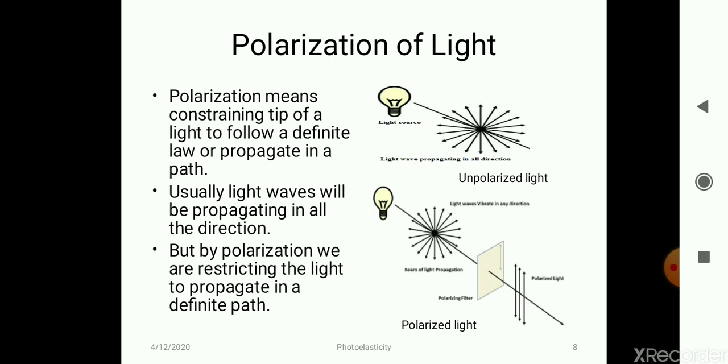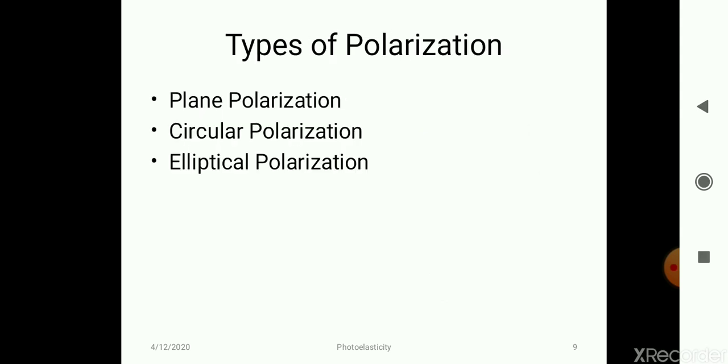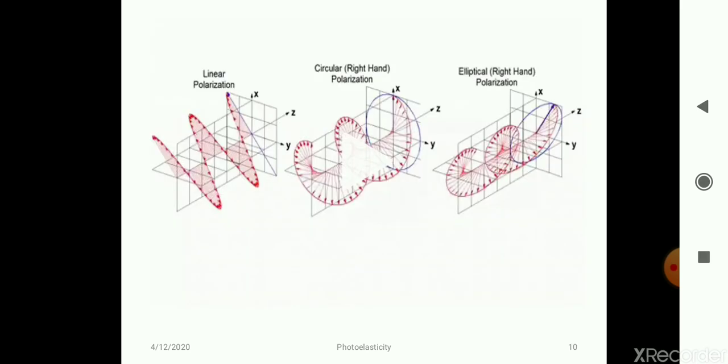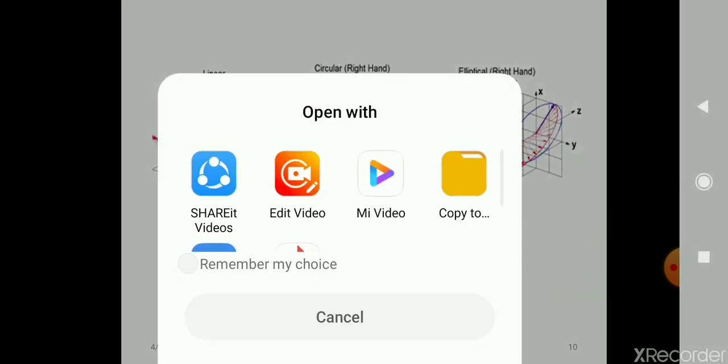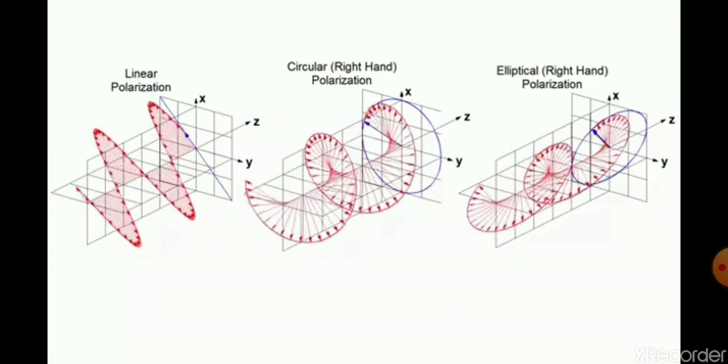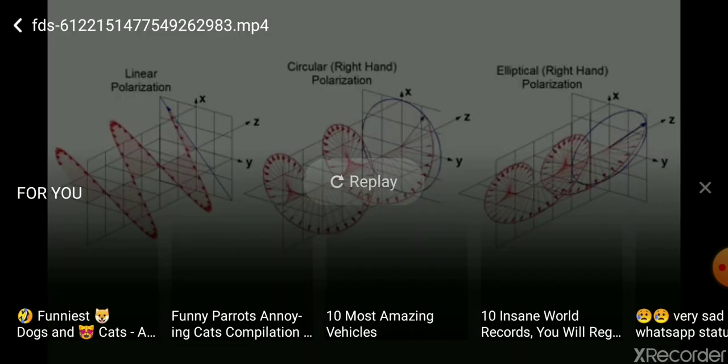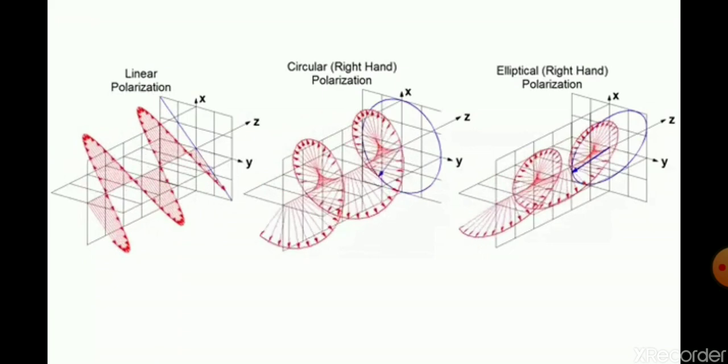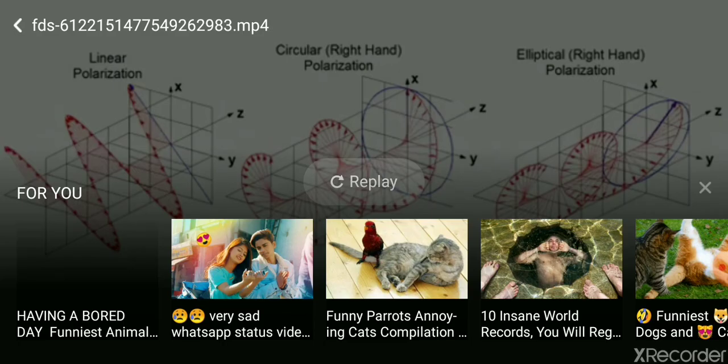Usually light waves will be oriented in all different directions, but by using polarization we are restricting the light to travel a particular path. We have different types of polarization: plane polarization, circular polarization, and elliptical polarization.